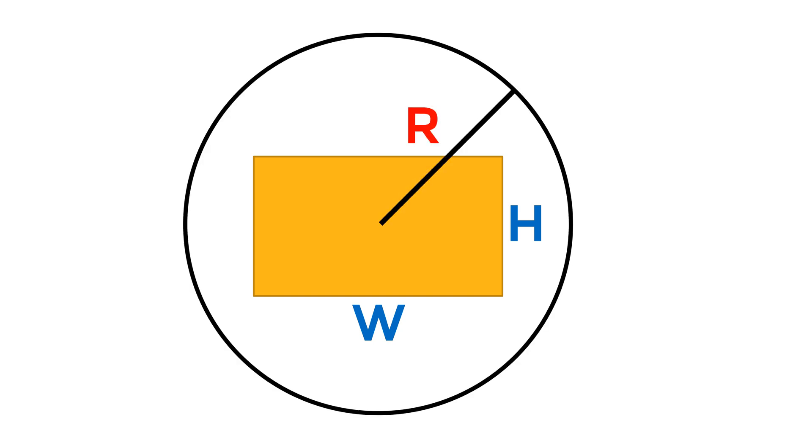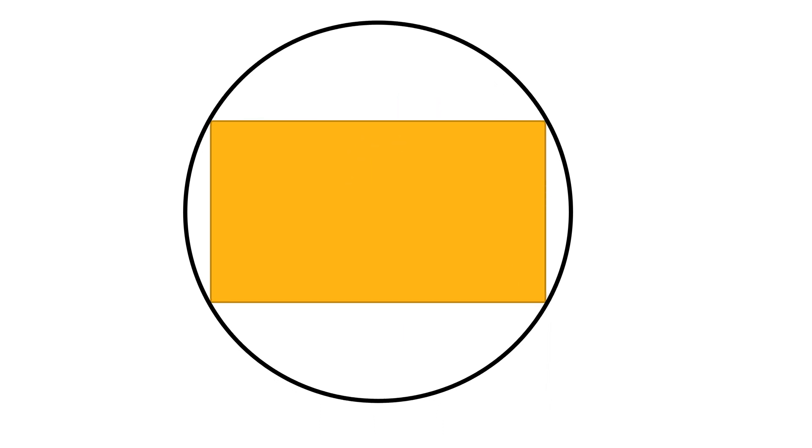Consider a rectangle with width w and height h and a circle with a radius r. Currently, the rectangle is small enough to stay inside of the circle, but the question is how large the rectangle can be without bumping out of the circle.